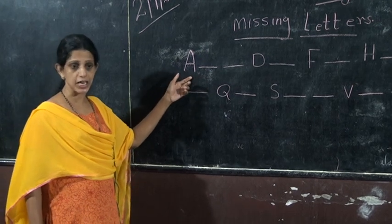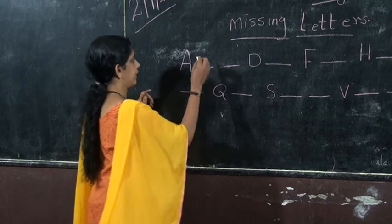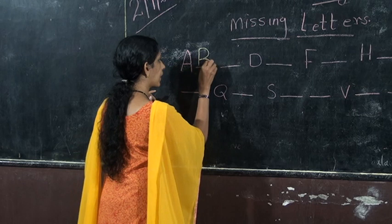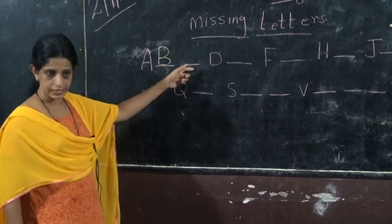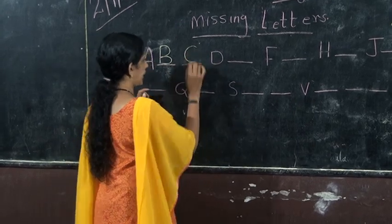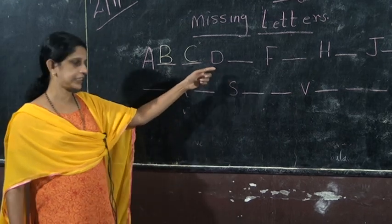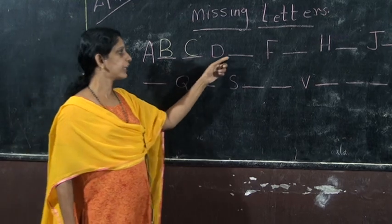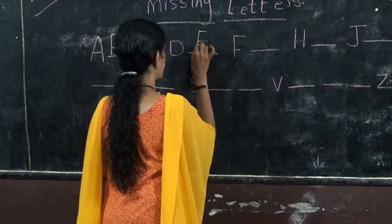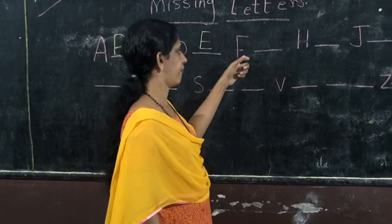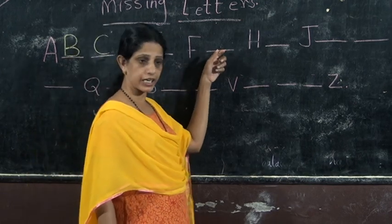This is A. Which letter is this? A. What comes after A? B. Then what comes after B? C. Which letter comes after B? C. Then after C, D. D is already written here, so we don't want to write the letter D. Then after D, which letter? E. After E? F. F is already here, so we don't want to write the letter F again. What's the letter after F? G.